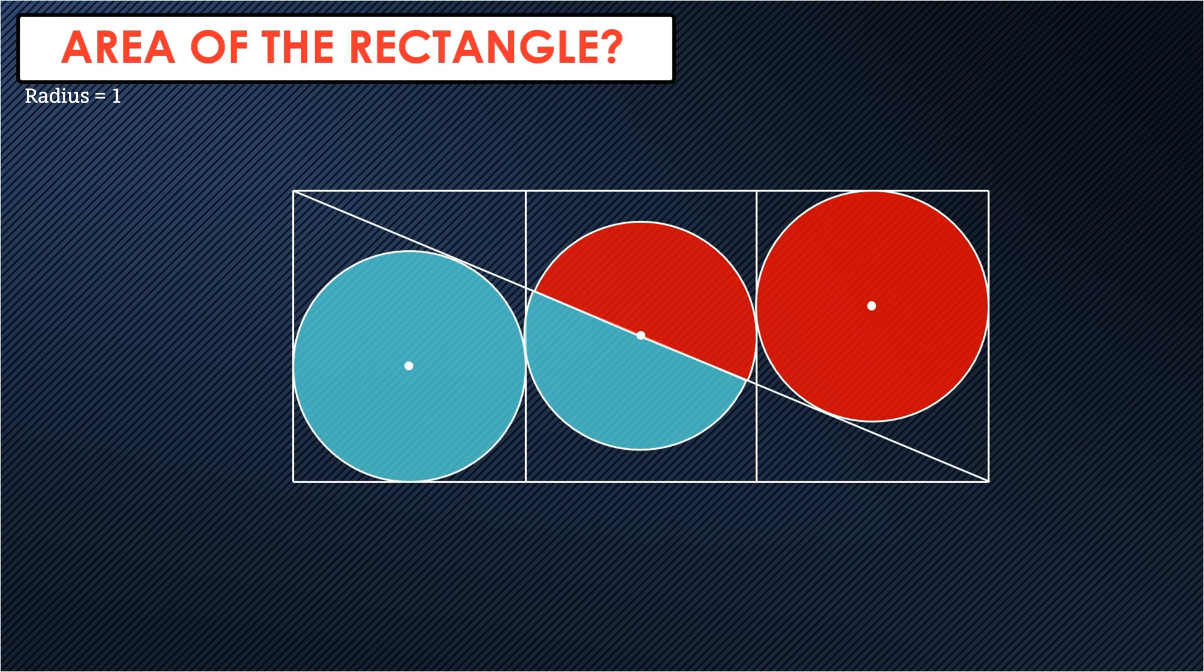Okay, lovely question here. So we have a rectangle. We want to find out the area. The rectangle is divided into three equal parts. Within each of those parts is a circle. All circles have the same radius.